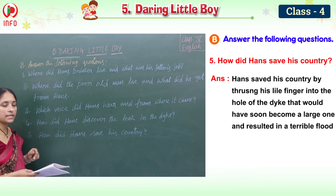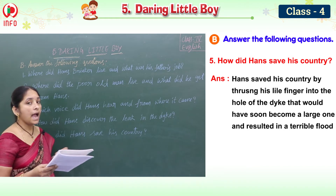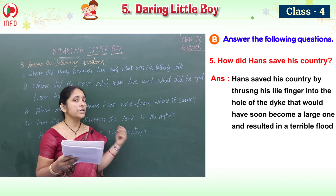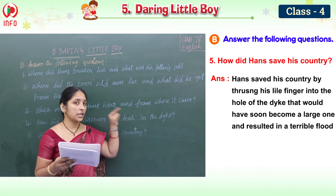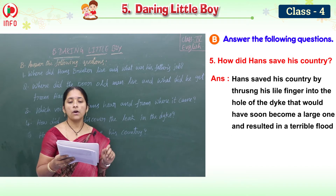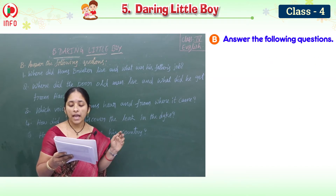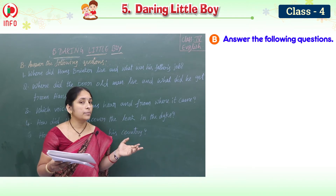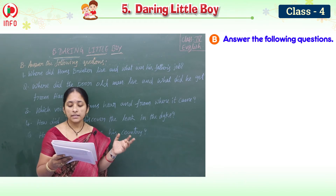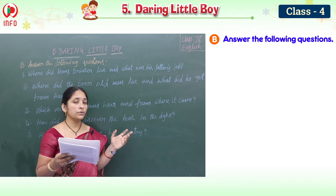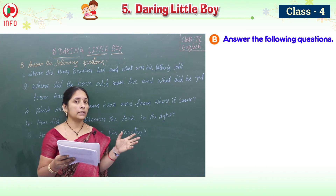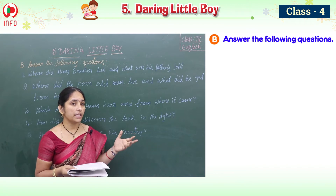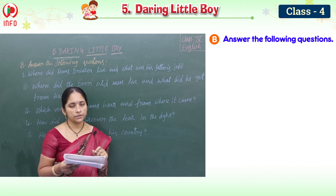The fifth question: how did Hans save his country? Hans saved his country by thrusting his little finger into the hole in the dike, which would have soon become a large one and resulted in a terrible flood.